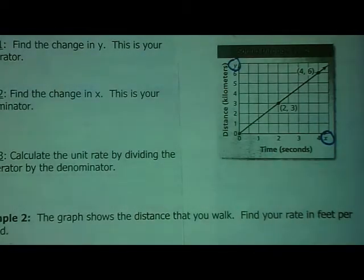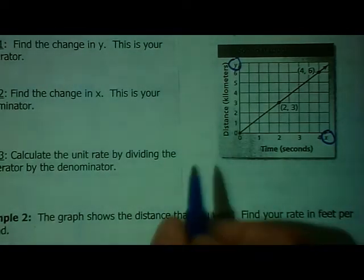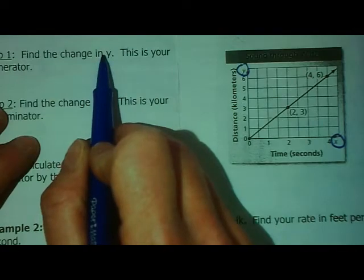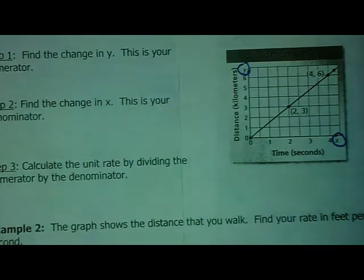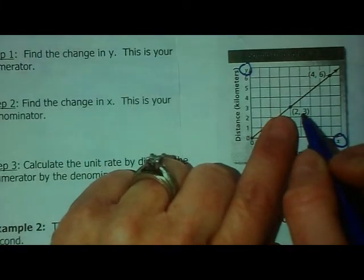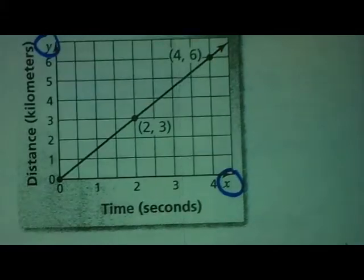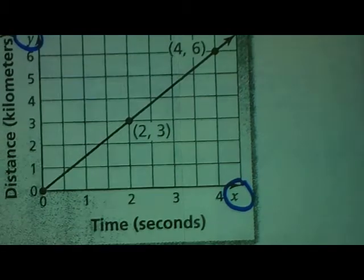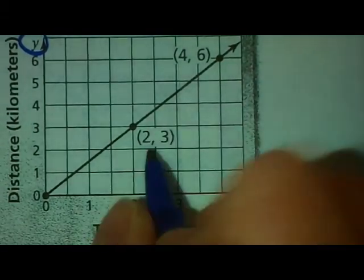All we need to do is figure out what our change in y is, what our change in x is, and then we can divide them. Take a look—you get two ordered pairs listed here. We have (2, 3) and we have (4, 6). Let me zoom in on that. It's better to see a little bit closer.